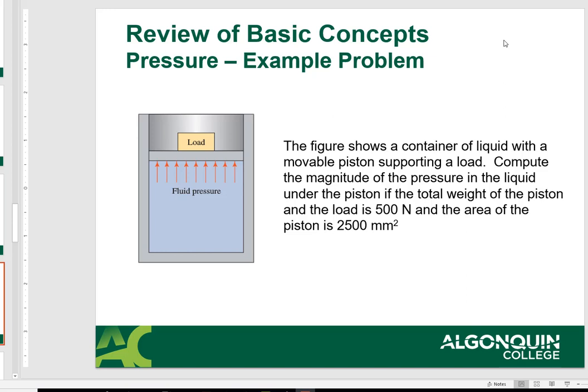This is a sample pressure problem, looking at a load on a cylinder creating a fluid pressure. The figure shows a container of liquid with a movable piston supporting a load. Compute the magnitude of the pressure in the liquid under the piston if the total weight of the piston and the load is 500 Newtons and the area of the piston is 2500 millimeters squared.